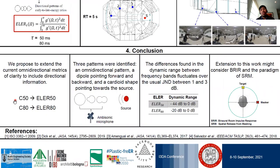As conclusion of this work and this short description, we can say that we have extended the current omnidirectional metrics of clarity to include directional information. Also, the three polar patterns are identified: